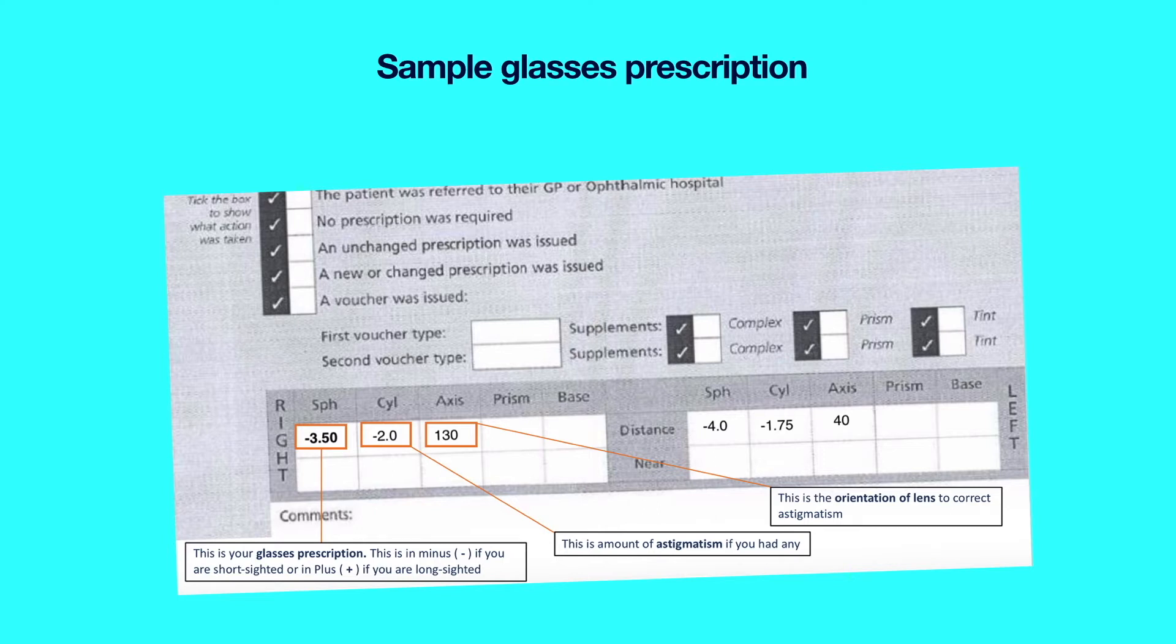In this patient, the prescription for the right eye is minus 3.5 diopters under the SPH column, which stands for sphere, and minus 4 diopters for the left eye, which means this is a near-sighted prescription. This patient is near-sighted in both eyes as he's wearing minus lenses.